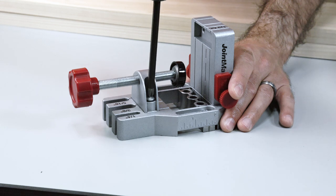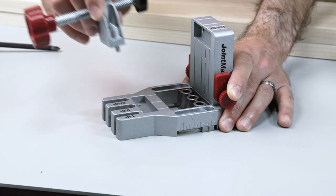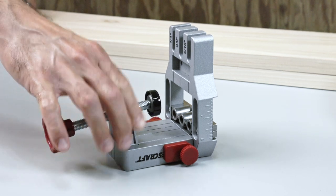The self-clamping design of the Joint Master means no additional clamps are needed to complete your project. The clamp can be moved from the main body to the clamping wall to create different joints.